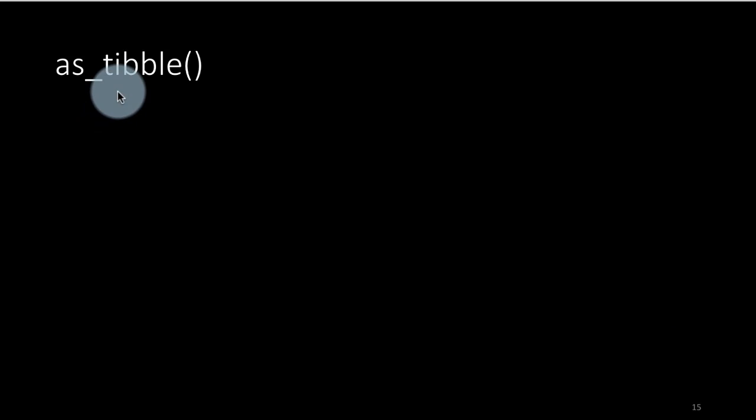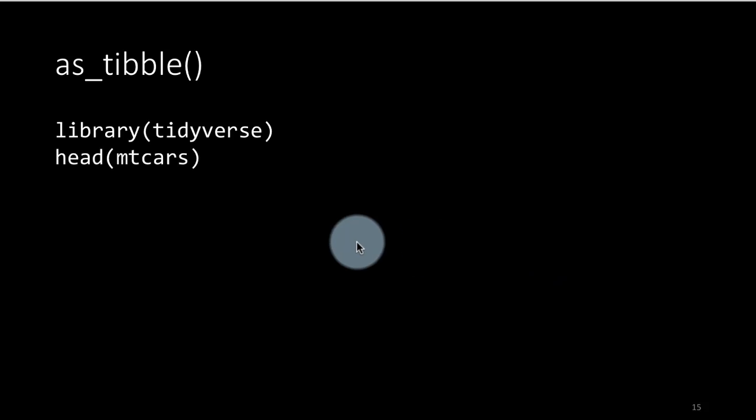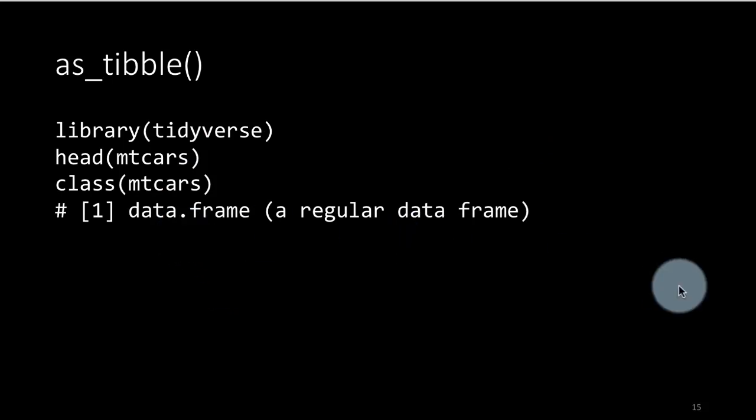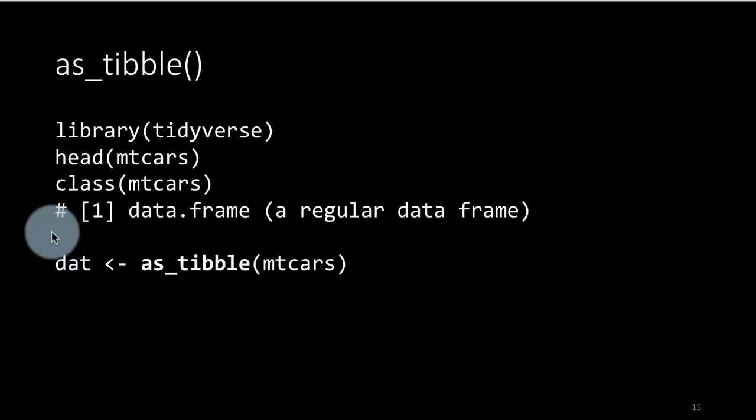So if you do have a data frame, you can use the function as_tibble to convert the data frame to a tibble. In other words, give it additional properties. So again, we load the library tidyverse as we've always done. So tidyverse, when you load tidyverse, you end up loading dplyr and you also end up loading ggplot and some other packages. So that's why we've formed a practice of just loading the package tidyverse. So mtcars, as you already know, is a built-in data frame. And if you do head mtcars, that's the function to see the first several rows. That's a data frame. So it'll show you the first six rows, I believe. Class mtcars, of course, we know that it's just a regular data frame. But what I'm doing now is saying as_tibble mtcars. That is, I'm converting mtcars into a tibble and storing the result in a data frame called dat. I could have given it a different name. I could have called it mtcars_tib or something.